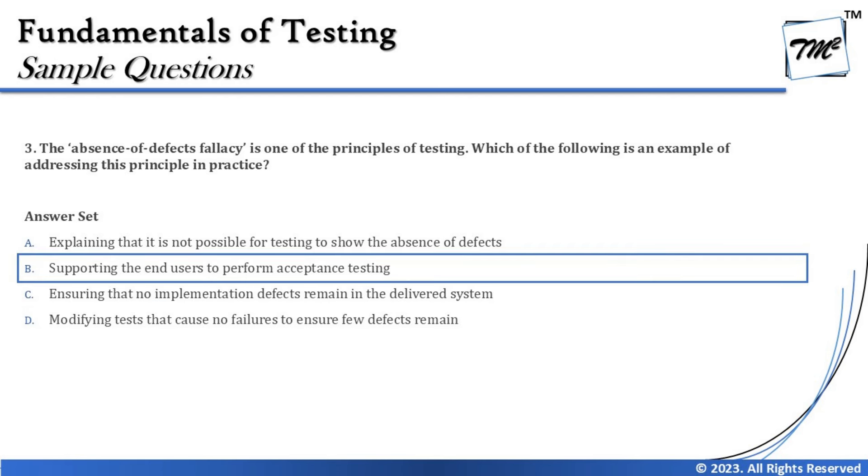The right answer for Question 3 is B — supporting the end users to perform acceptance testing. This particular set has many tricky statements, and we need to deal with them to build confidence. At times you may feel a statement doesn't seem right as an answer, but as per the syllabus it is. That's all for this tutorial — feel free to comment below with any questions. Keep learning, keep exploring, and happy learning.